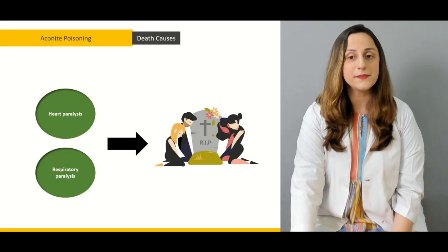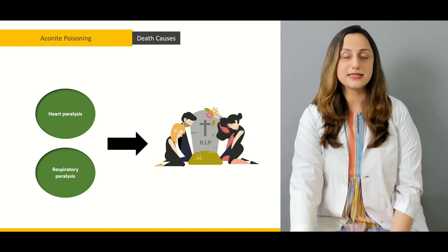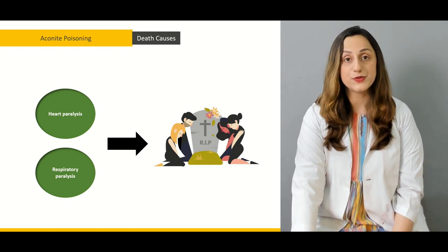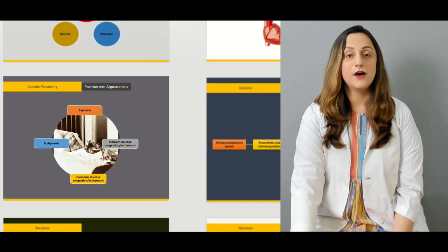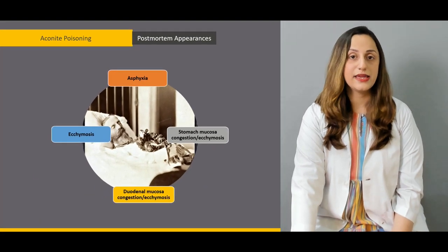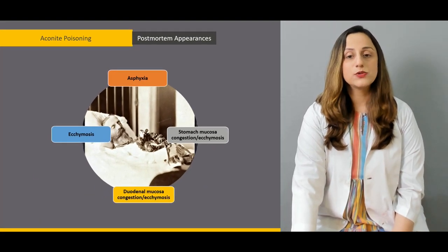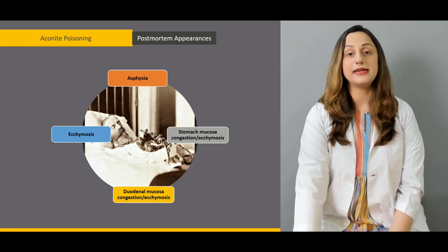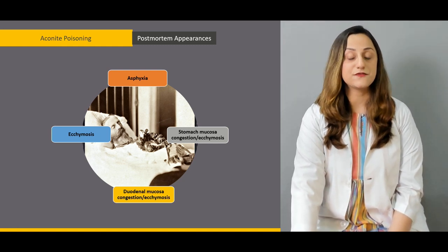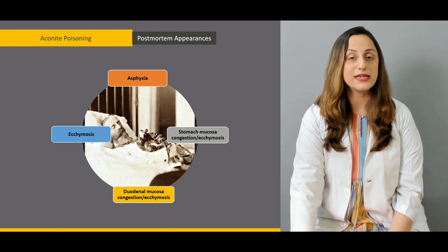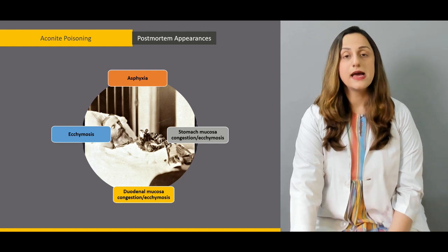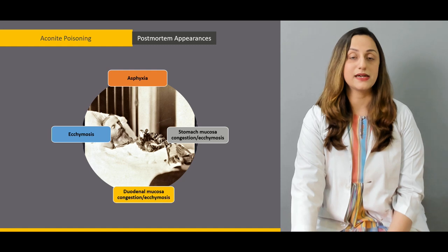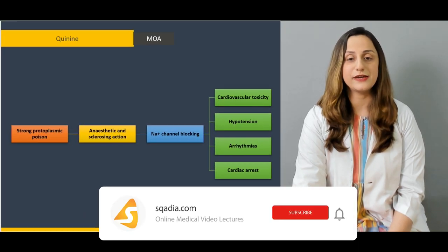The causes of death include heart paralysis, resulting in a fatal condition. Post-mortem appearances include asphyxiation — the signs of asphyxia and cyanosis are quite peculiar. How to distinguish between an asphyxial death and aconite poisoning is also discussed.